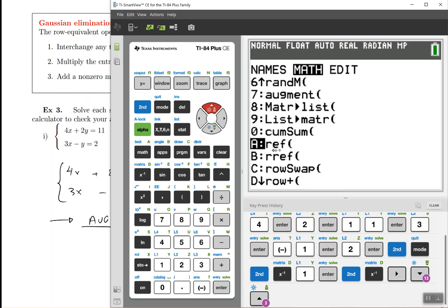So what's the difference between the two of them? The REF is the row echelon form. This is the one that puts ones on the diagonal, zeros under, but leaves everything else alone. The second one is the one that goes through all the way, and it gives you ones on the diagonals, zeros everywhere else.